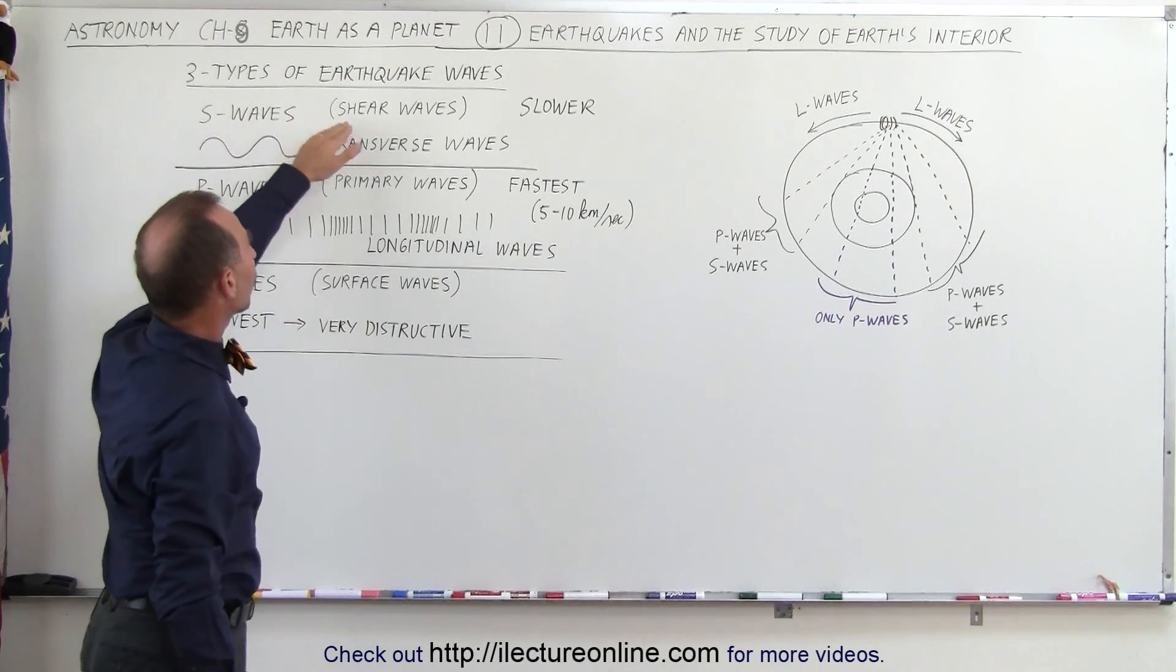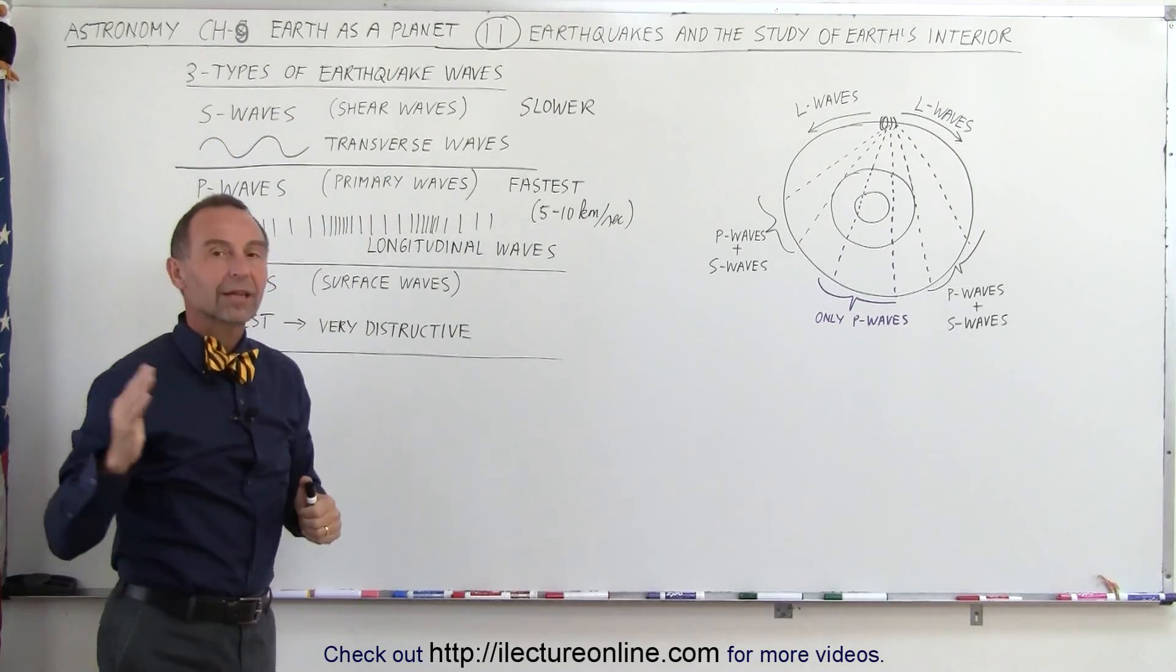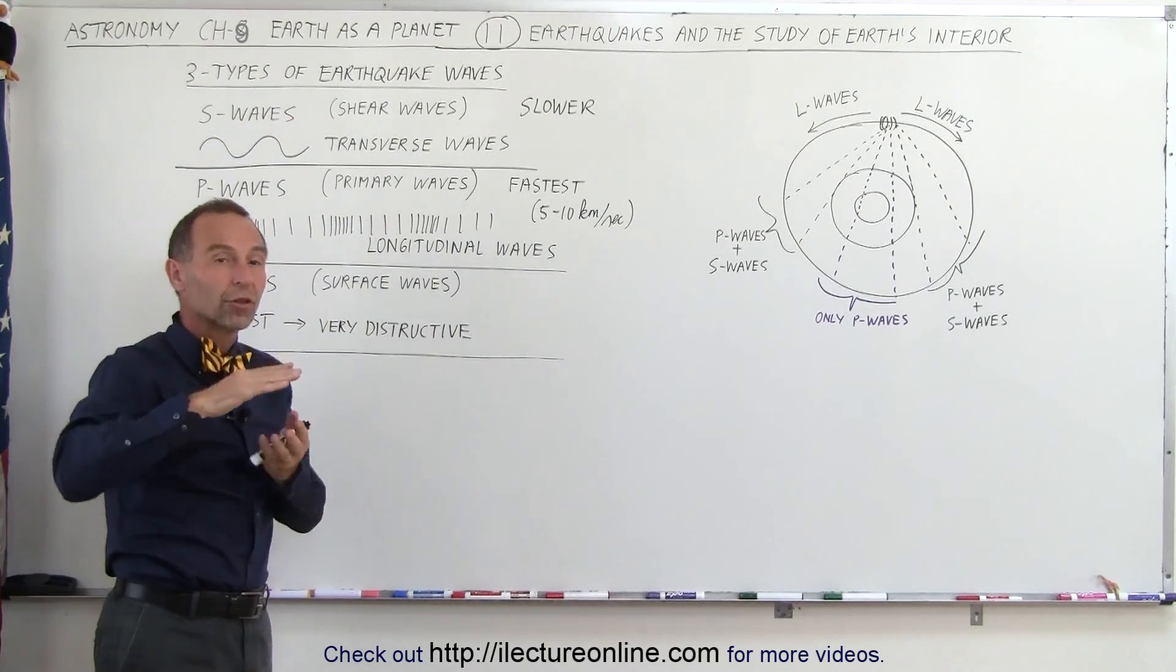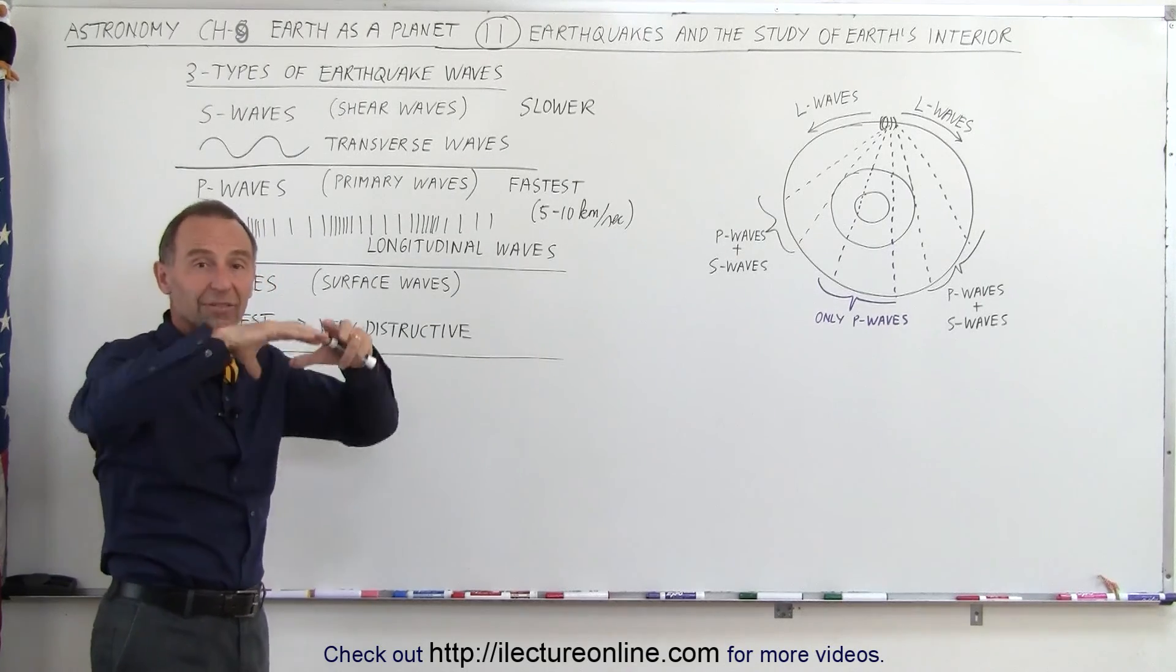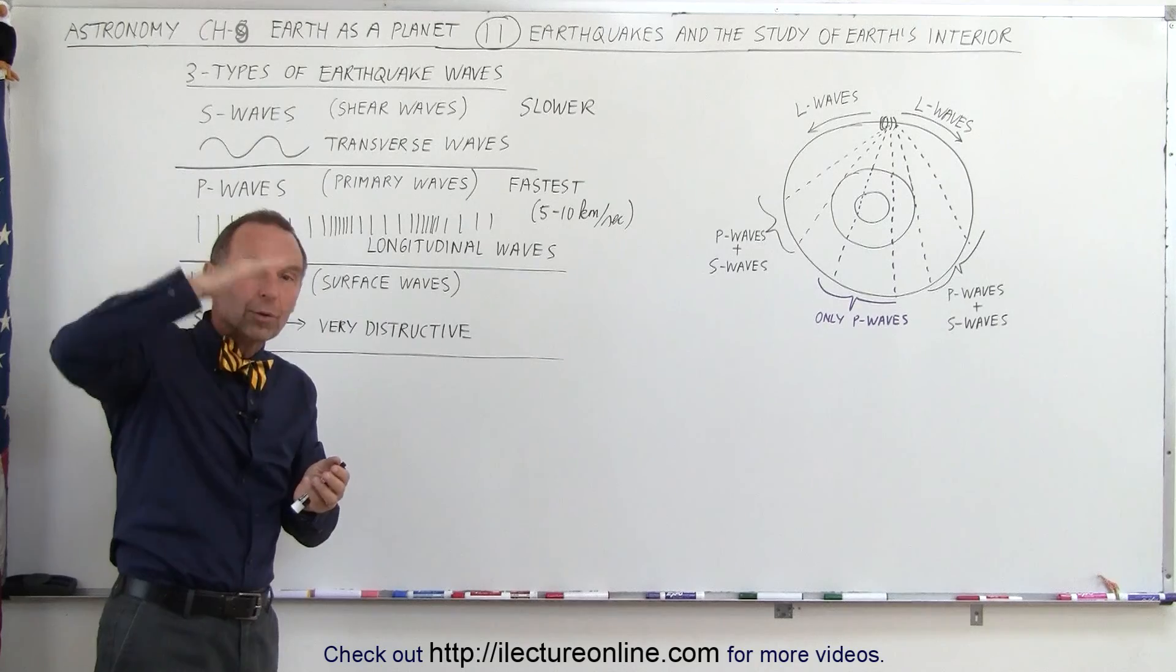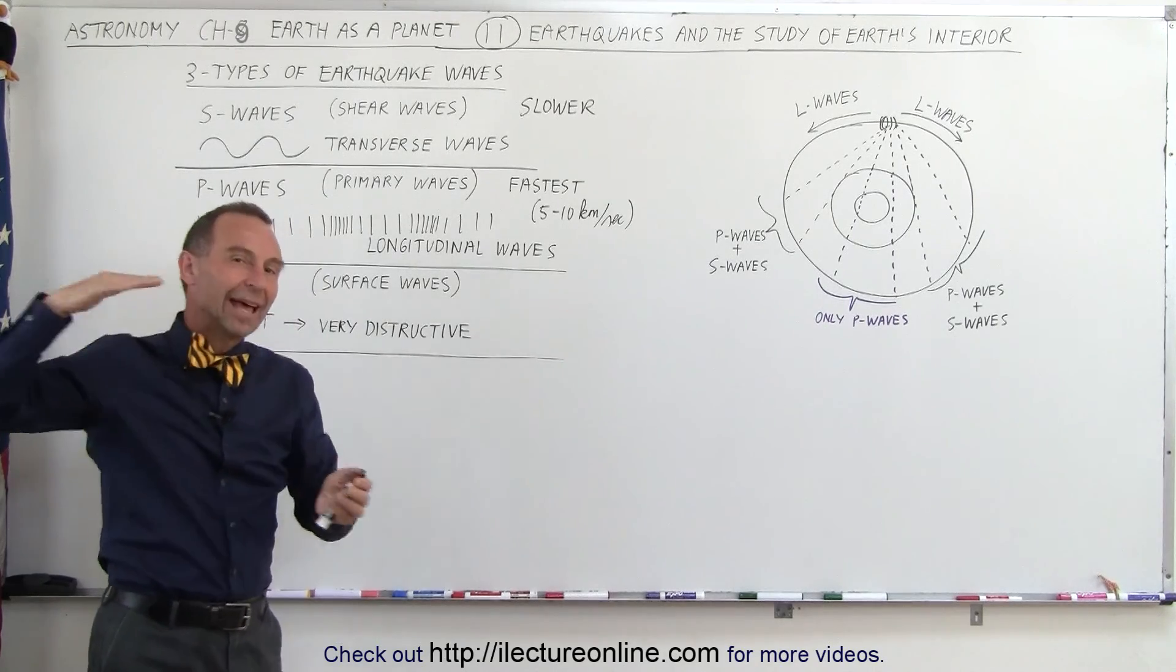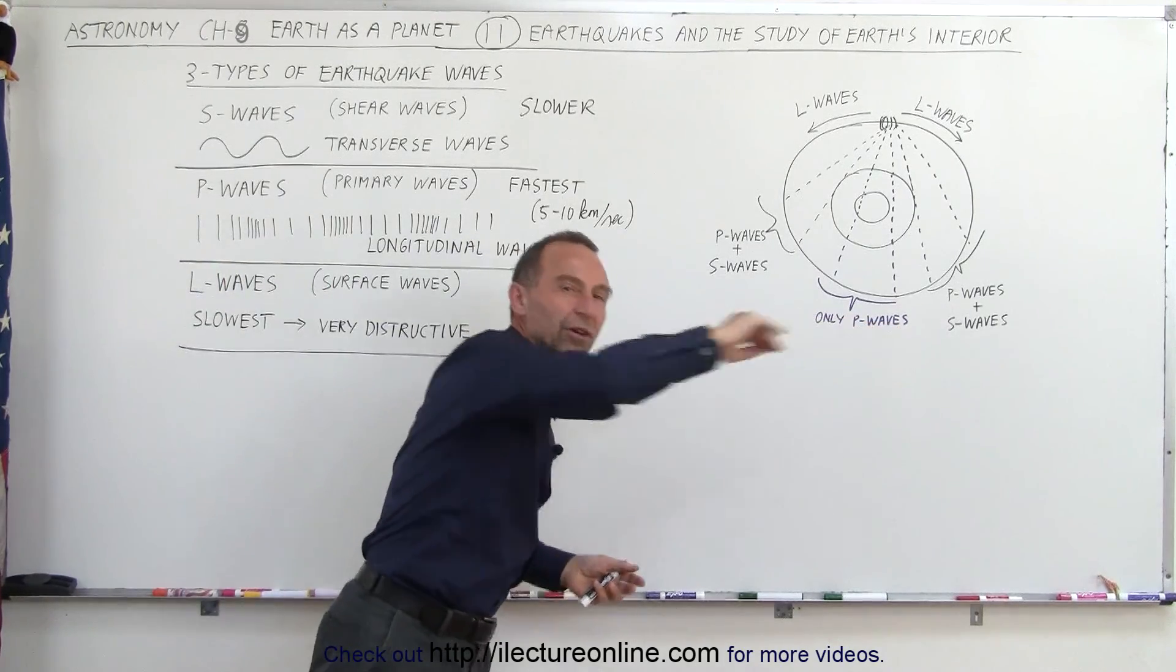The S waves are also called shear waves. They're transverse waves. In other words, the particles through which the waves travel, in this case the rock and the metal that's inside the Earth, will move up and down as the energy of the wave travels in the direction of the wave.